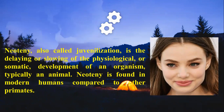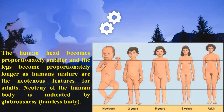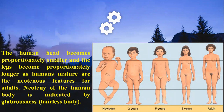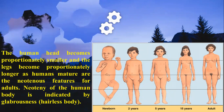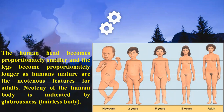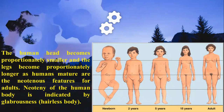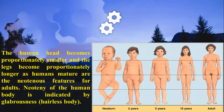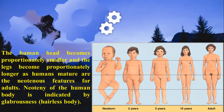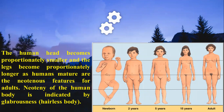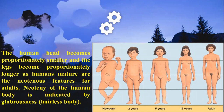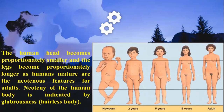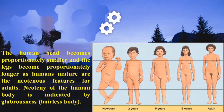Another human neoteny example is that the human head becomes proportionally smaller compared to chimpanzees or other primates, and the legs become proportionally longer as humans mature, unlike apes or chimpanzees. Neoteny of the human body is also indicated by glabrousness — the retention of a relatively hairless body into adult stage, specifically in females.